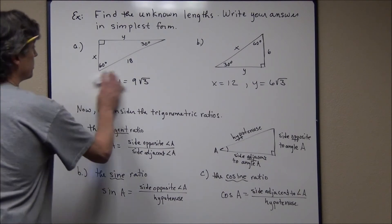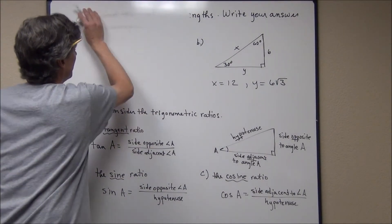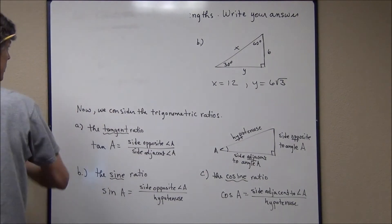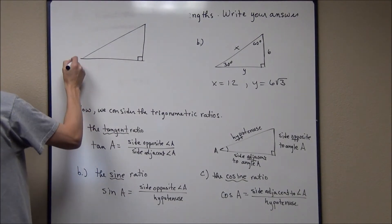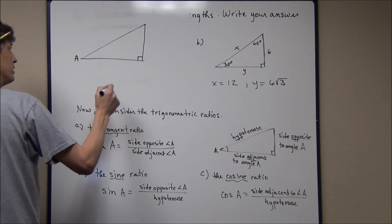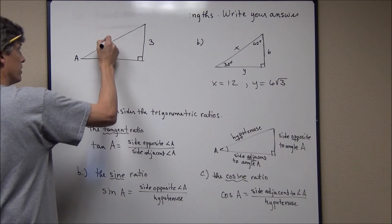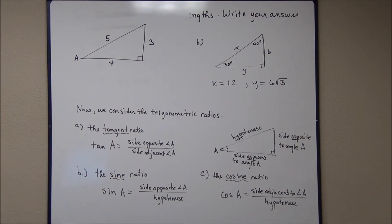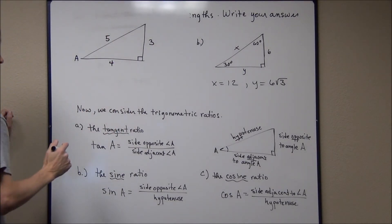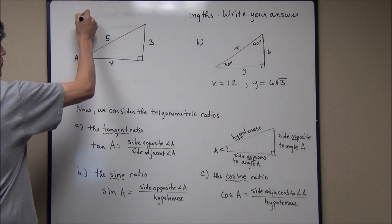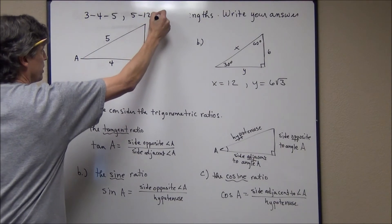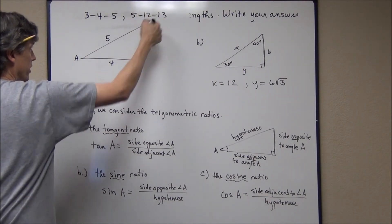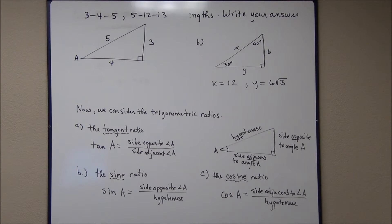Let me do an example with a right triangle where this length is 3, this length is 4, and this length is 5. Using the converse of the Pythagorean theorem, 3² + 4² = 5², which confirms it. This is called a Pythagorean triple — 3-4-5 is one, and 5-12-13 is another good one to memorize. I'm going to find the tangent, sine, and cosine of angle A.